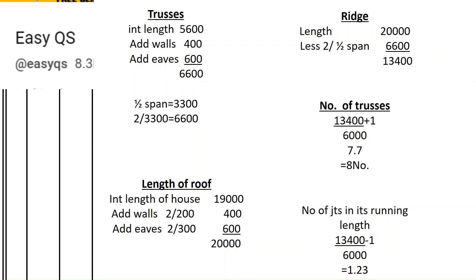We shall take the total length of 19,000 and find the length of the house so we can subtract where we have the hipped ends, to remain with the center part where the trusses will be distributed. The internal length is 19,000; we add the walls (200 on both sides = 400) and the eaves (300 on both sides = 600), giving a total of 20 meters. We then subtract two half-spans on both ends, which is 6,600, leaving us with 13,400.